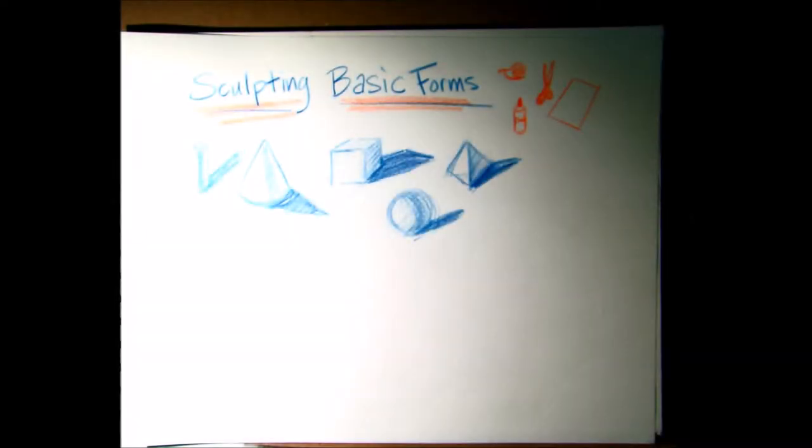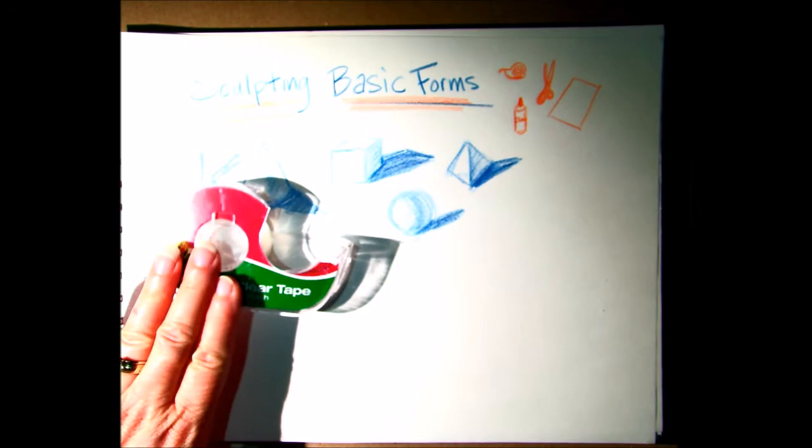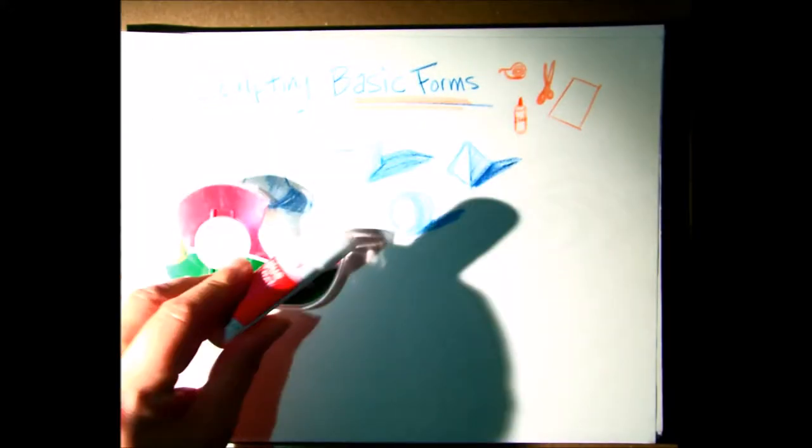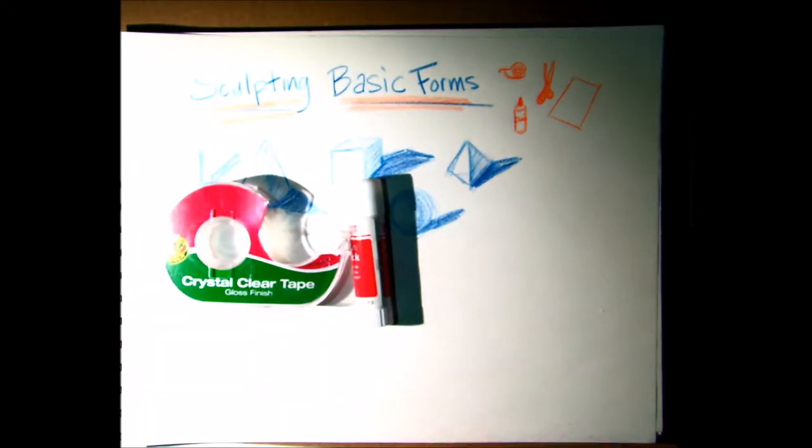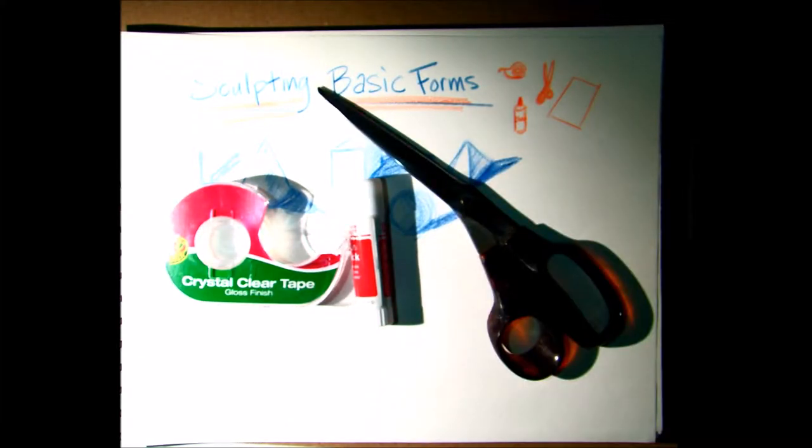Alright, so this is Mrs. Chenoweth and this is going to be a basic video on sculpting basic forms and also ways that you can combine basic forms to make more complicated forms. So you'll need the following materials: you can use tape or glue, white glue is fine, glue stick is also fine, and obviously a pair of scissors and you'll need some paper.